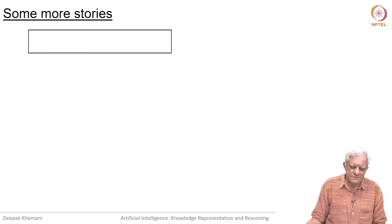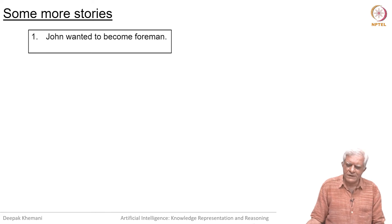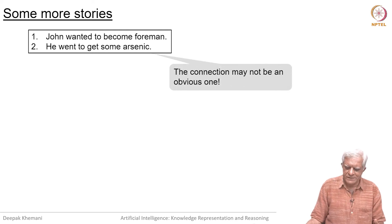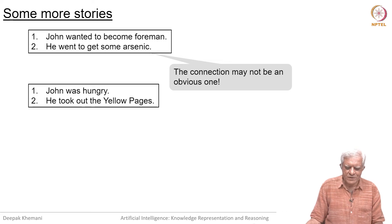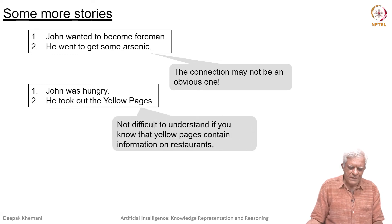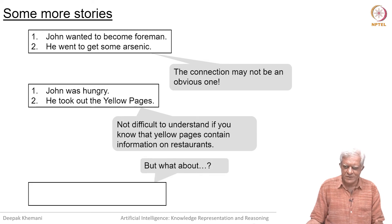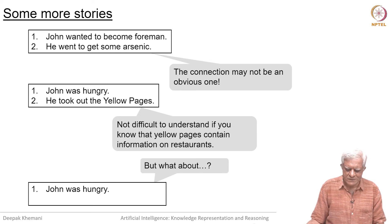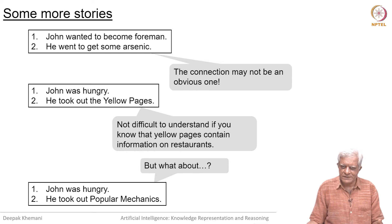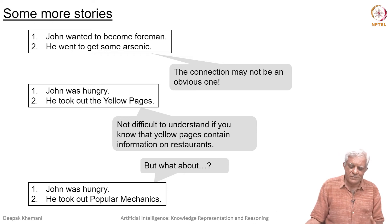Let us look at a couple more stories. John wanted to become the foreman in his firm — he went to get some arsenic. The connection may not be very obvious unless you imagine there is some competition and a sinister design somewhere. John was hungry — he took out the yellow pages; that is understandable because yellow pages often have information about restaurants. But what if we said John was hungry and he took out Popular Mechanics? Maybe there is a connection, but it is left to our ingenuity to figure out what that connection could be.